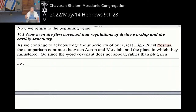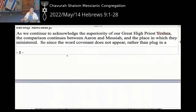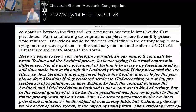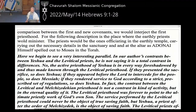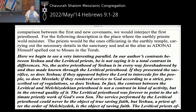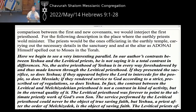The whole point is to picture the necessity of a divine, sinless, unblemished one to come and die for our sins — to point us to the fact that something more is coming. Since the word 'covenant' does not appear, rather than a comparison between the first and new covenants, what we would interject is the first priesthood. Messiah our high priest is the main subject; Aaron was the first priest. The following description is the place where the earthly priest would minister, carrying out the necessary details in the sanctuary, which Adonai himself spelled out to Moses in the Torah.